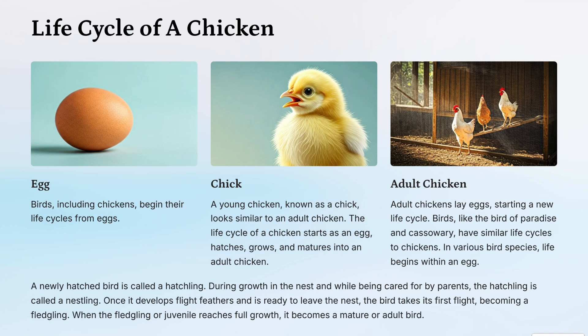Now let's look at the life cycle of a chicken. Birds, including chickens, begin their life cycle from eggs. A young chicken, known as a chick, looks similar to an adult chicken. The life cycle of a chicken starts as an egg, hatches, grows, and matures into an adult chicken. Adult chickens then lay eggs, starting a new life cycle.